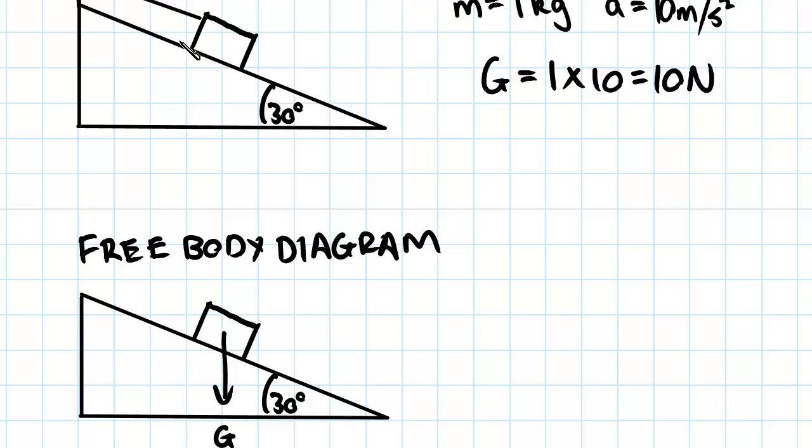Now we can draw in the tension from this cable. So that's acting in that direction and if we want to draw in an angle that's 30 degrees, and we're going to label this force as T. That's the tension in the cable.